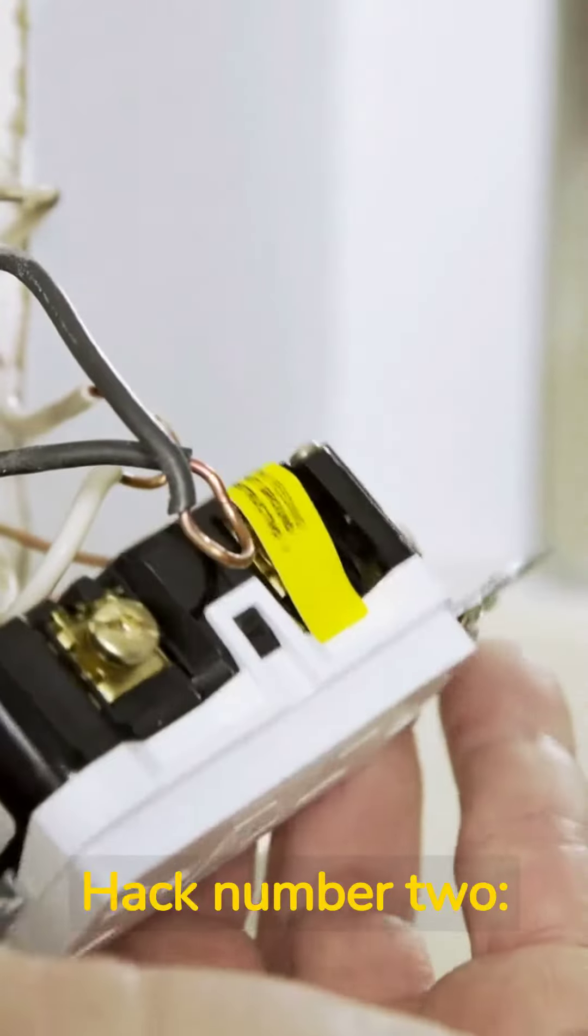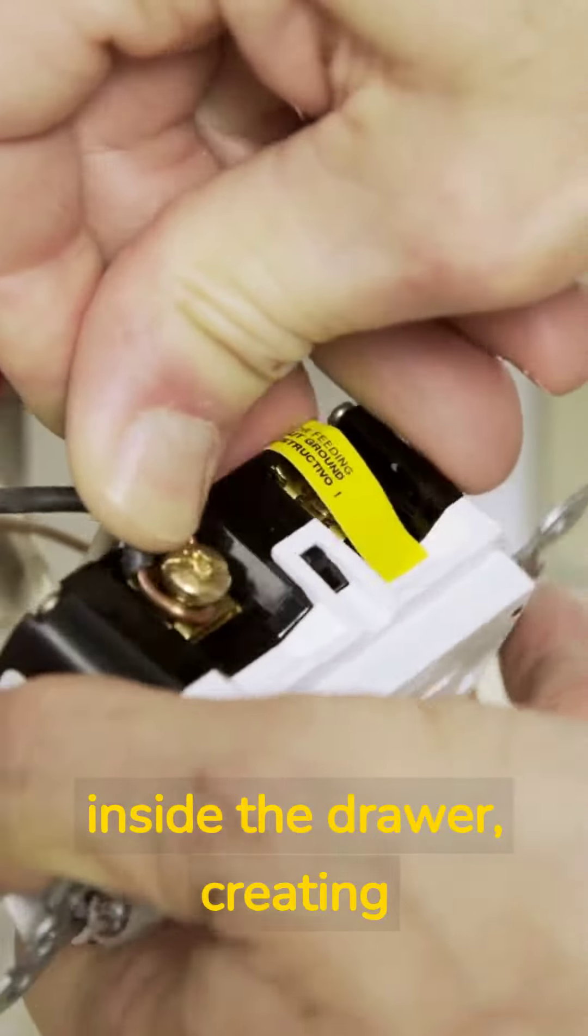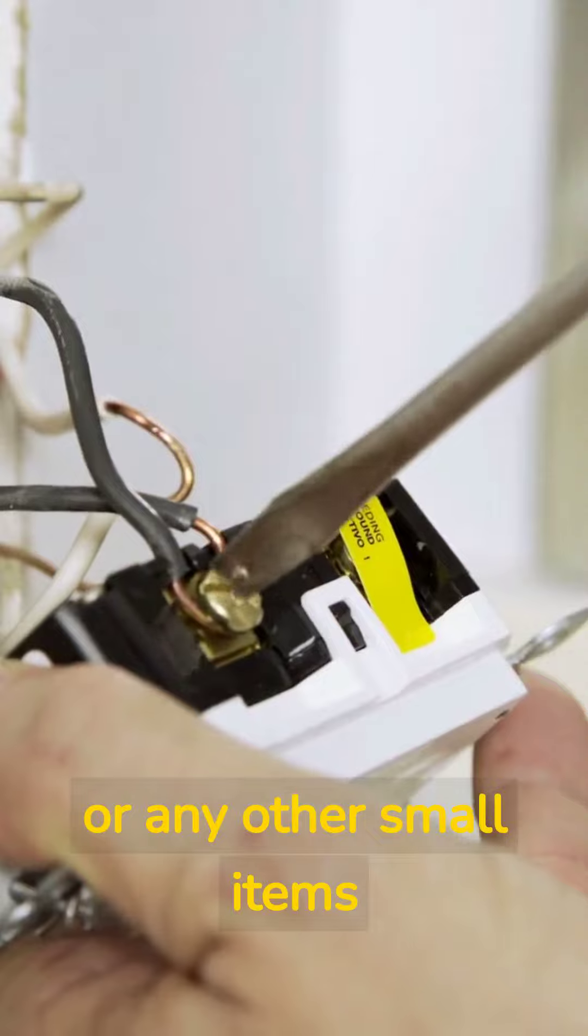Hack number two, organize your drawers with PVC pipes. Cut the pipes into small sections and place them inside the drawer, creating compartments for socks, underwear, or any other small items you need to store.